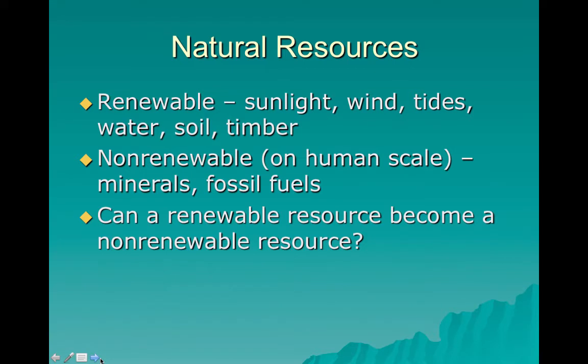One of the big topics we're going to talk about is how we use our natural resources — the things in the natural world that we use as humans for our survival. They can be split into two parts: renewable, which are things that replenish within our lifetime — including sunlight, wind, and tides, which are considered perpetual because they should never run out — as well as things like freshwater, soil, and timber.